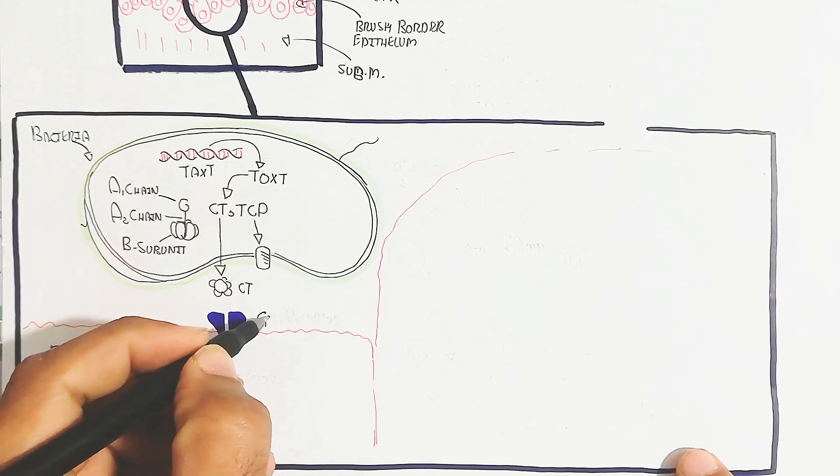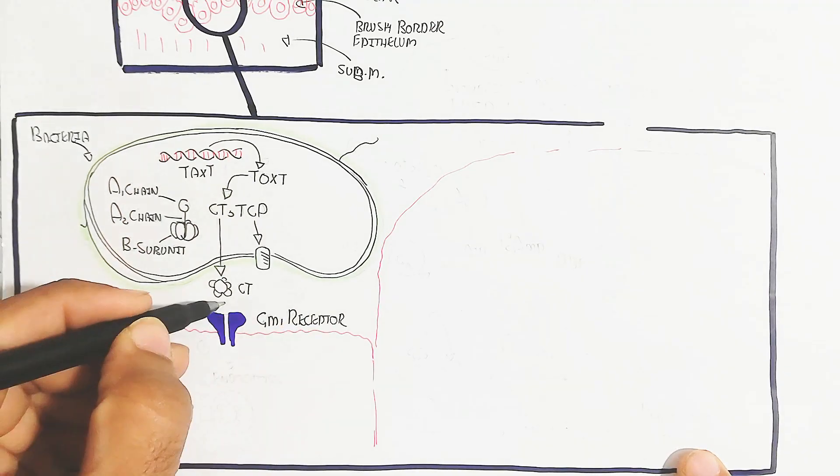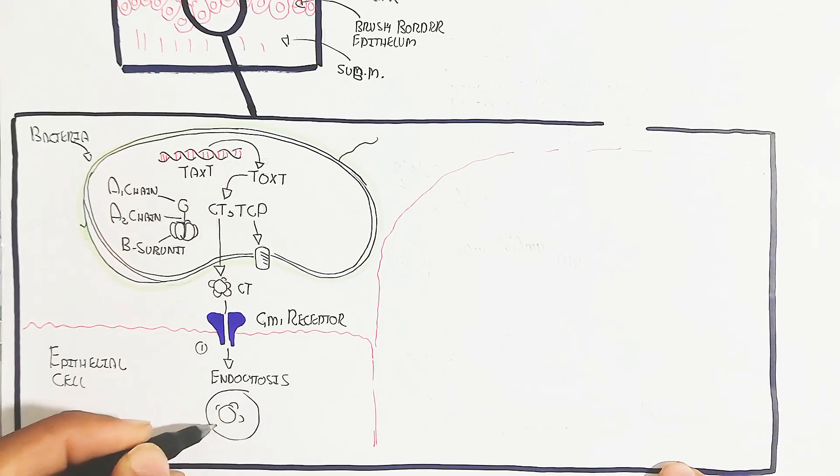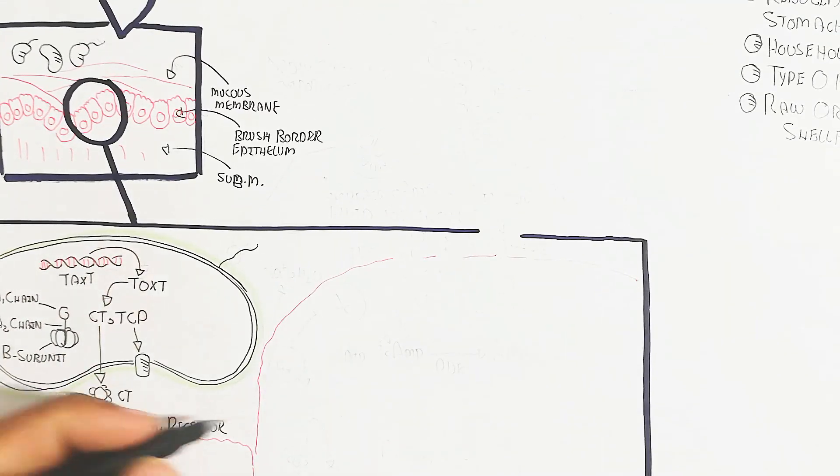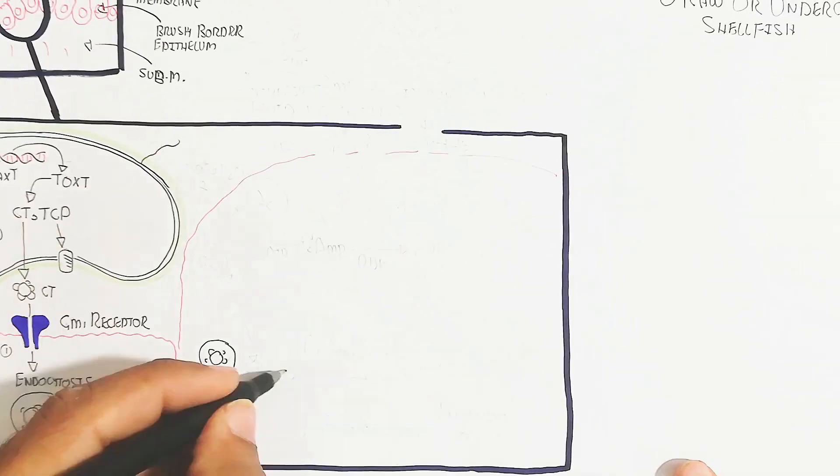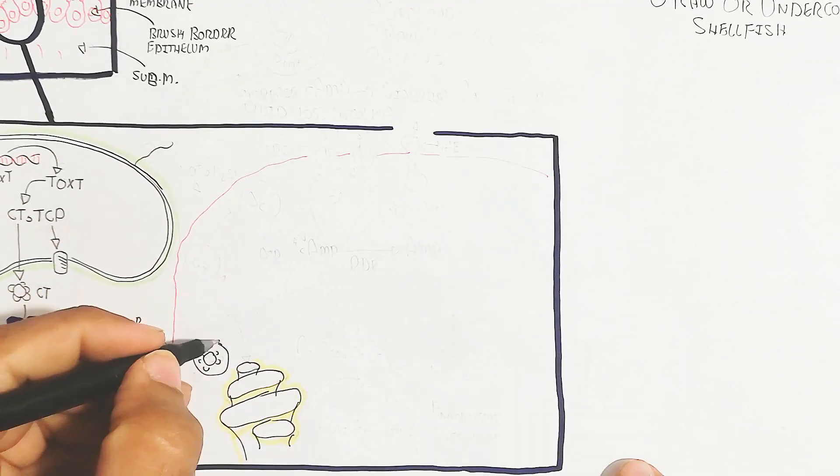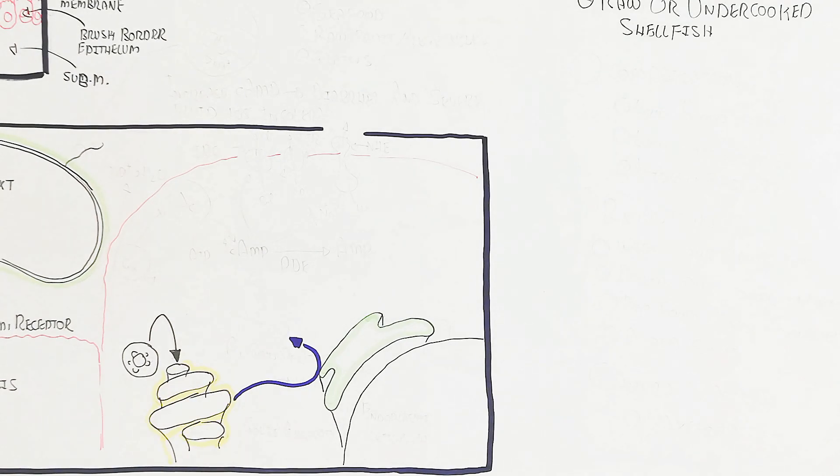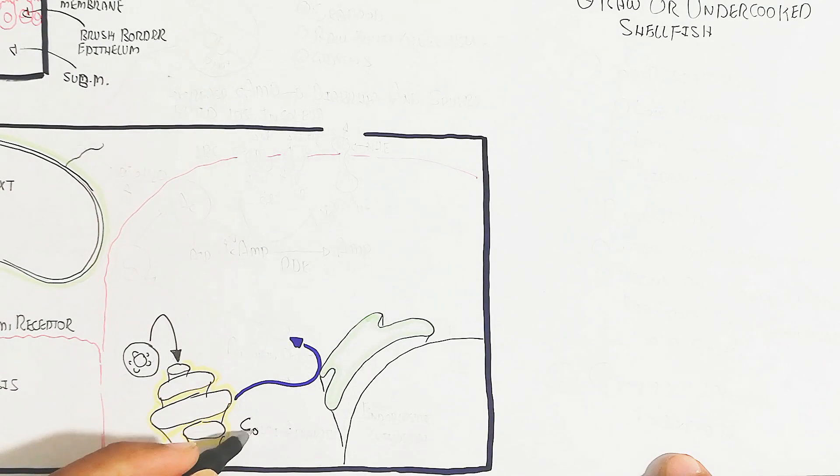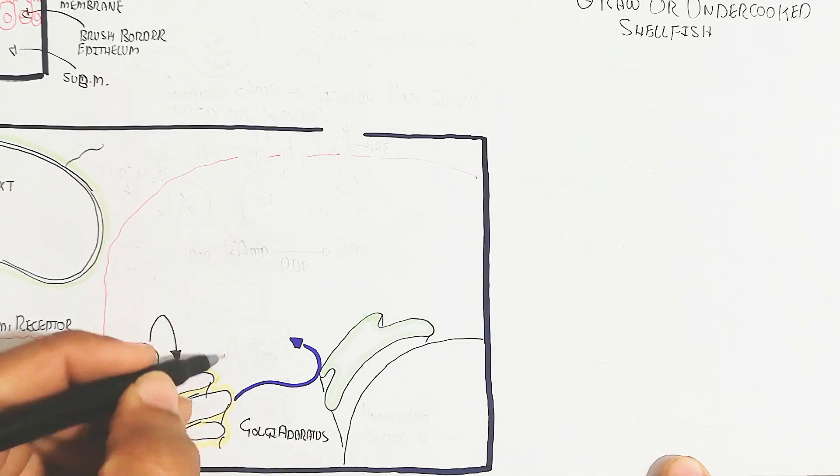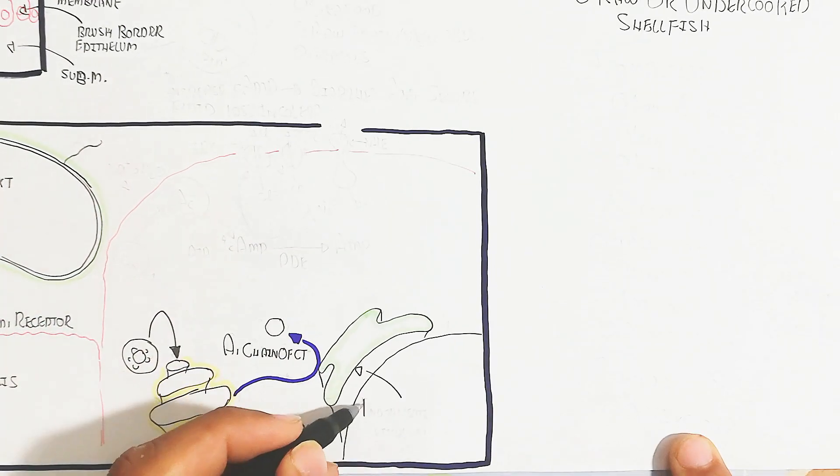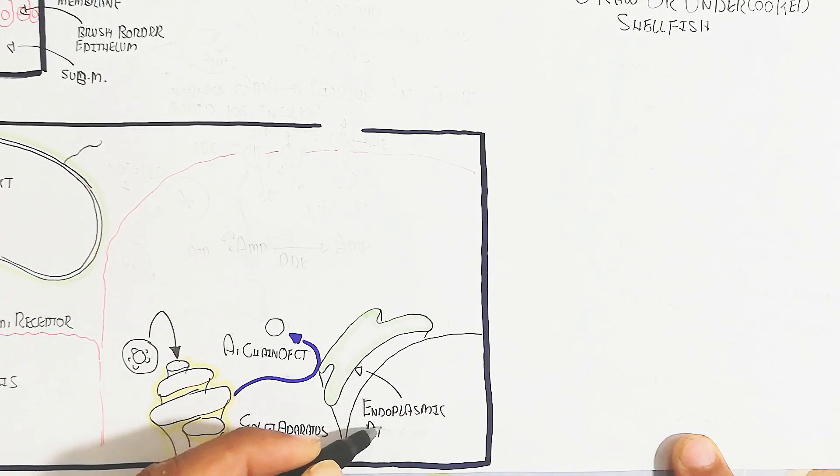This channel is known as the GM1 receptor. This GM1 receptor will receive the cholera toxin and will endocytose to form an endosome. This endosome goes into the Golgi bodies for further processing, and the A1 chain of cholera toxin will be released from the endoplasmic reticulum. After this, the A1 subunit of cholera toxin will trigger...